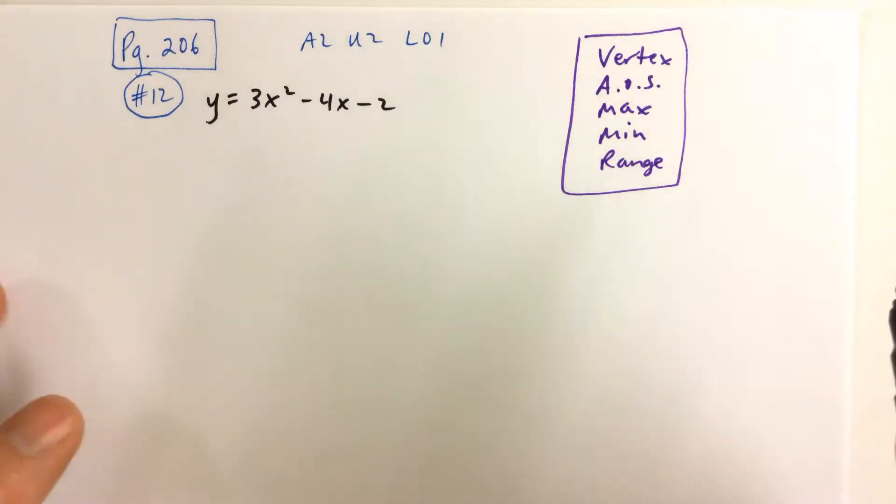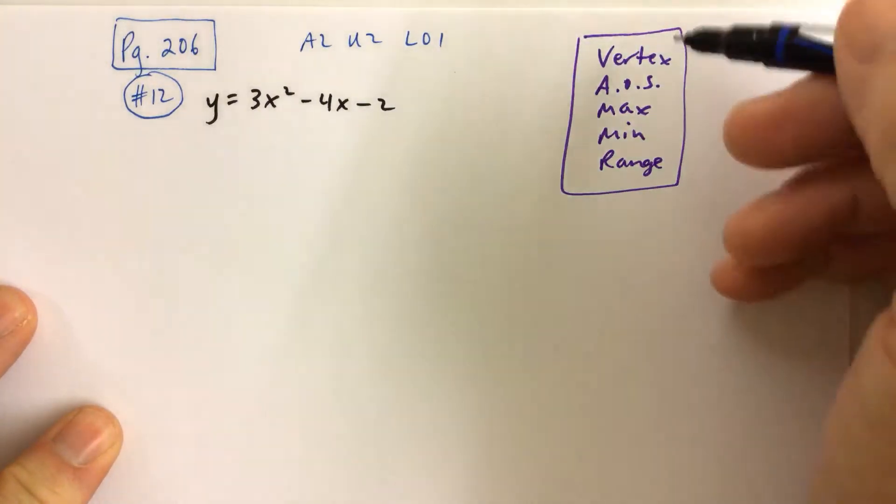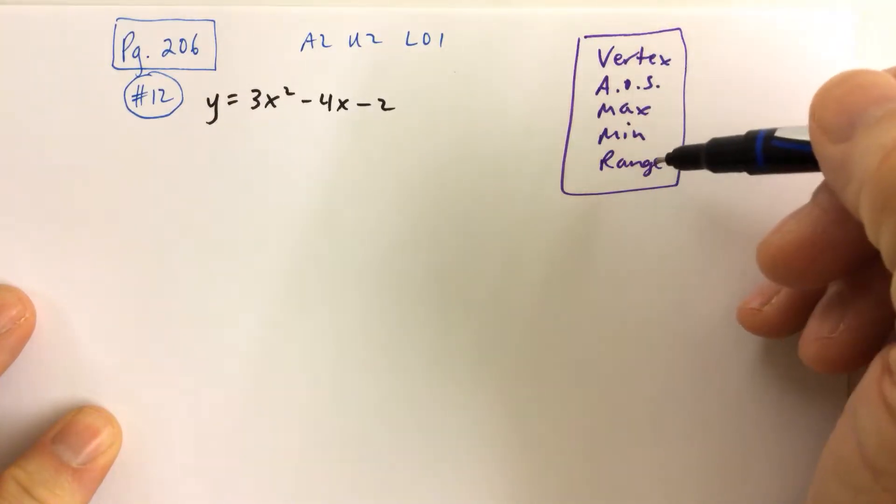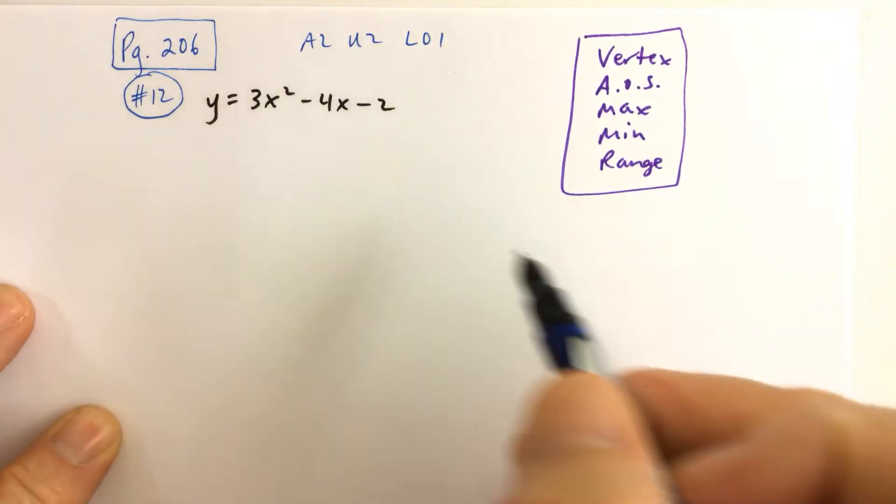For problem number 12, we're asked to find all these things: vertex, axis of symmetry, max, min, and range for the given function.